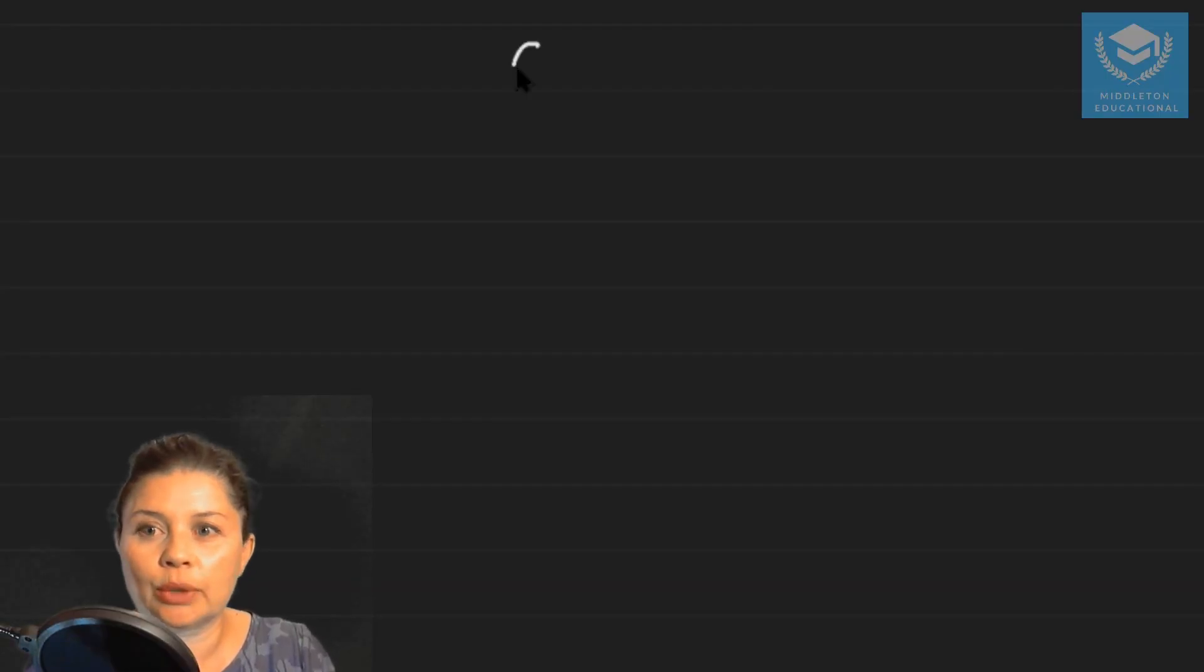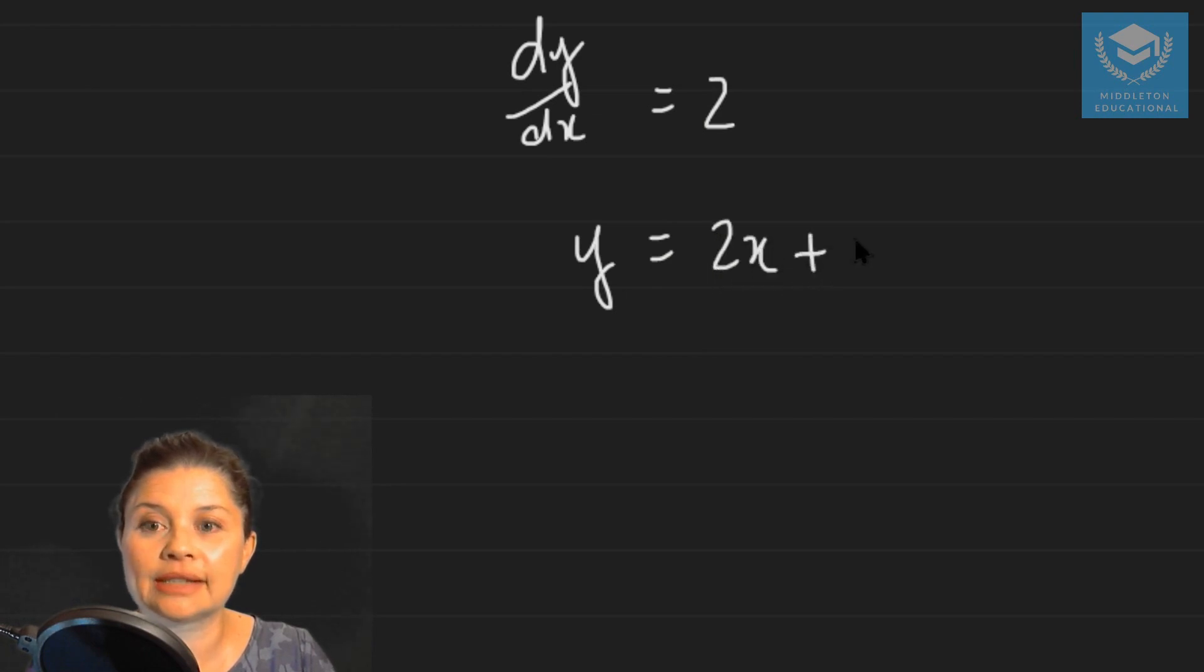Say we have an example where dy/dx equals 2. This is a differential equation because you have a derivative within an equation. What we want to do when we solve this differential equation is ask what is y going to be so that the derivative is 2. We know the answer to that is going to be 2x plus some constant value. This is basically direct integration.